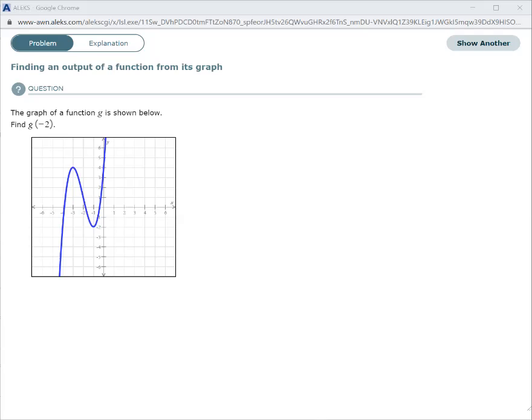Finding an output of a function from its graph. So it shows us the graph of function g and it wants us to find g of negative 2. Well, what we're going to do for that is we're going to say that negative 2 is our x because that's what we plug into functions as an x.